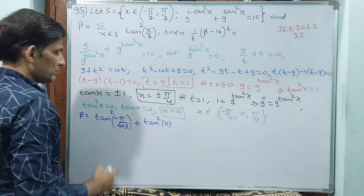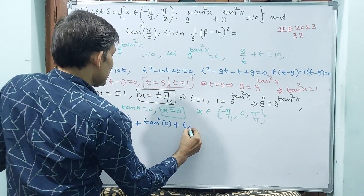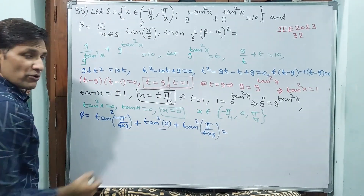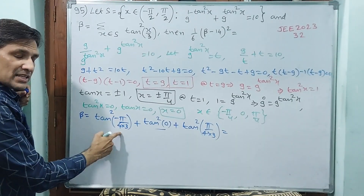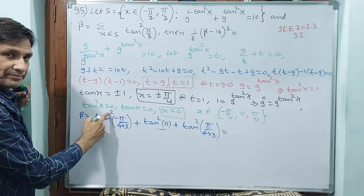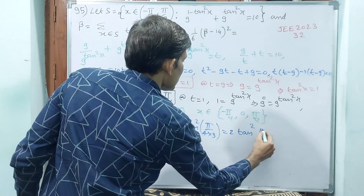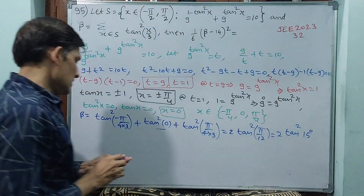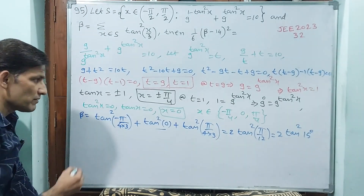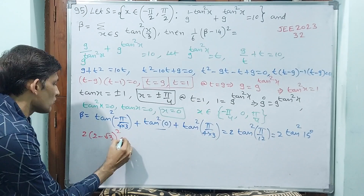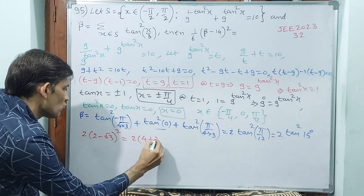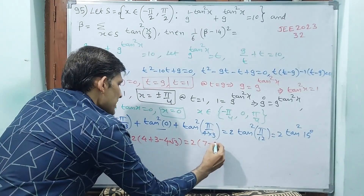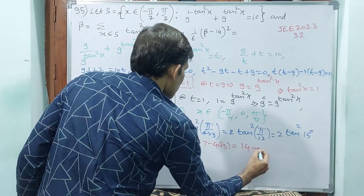Tan squared of 0 is 0, so that term vanishes. For the minus pi by 12 term, squaring removes the minus, so we get 2 times tan squared of pi by 12. That is 2 times tan squared of 15 degrees. From previous classes, tan 15 degrees equals 2 minus root 3. So beta equals 2 into (2 minus root 3) squared, which is 2 into (a squared plus b squared minus 2ab) = 2 into (4 plus 3 minus 4 root 3) = 2 into (7 minus 4 root 3), giving beta equals 14 minus 8 root 3.